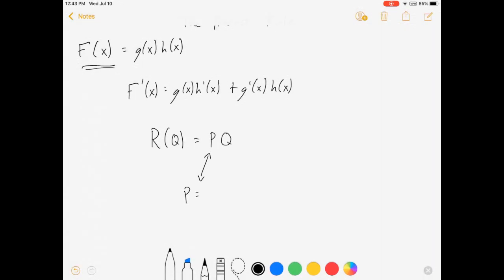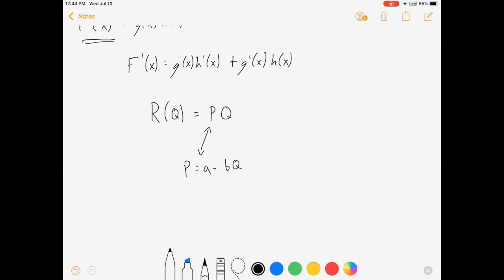But p is equal to a minus bq. We got some inverse demand curve like that.